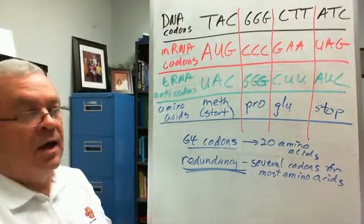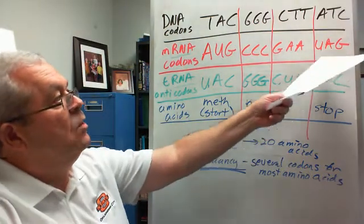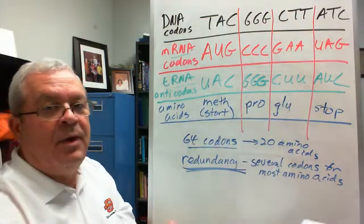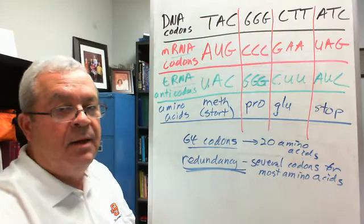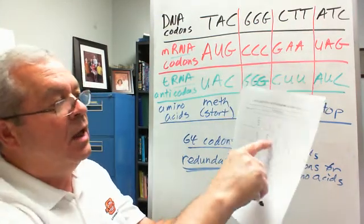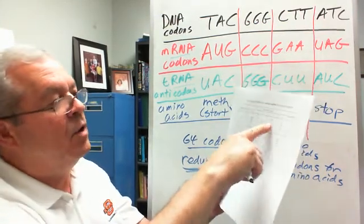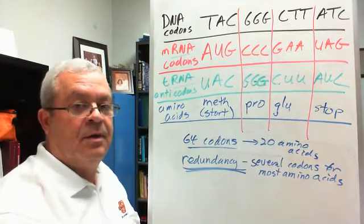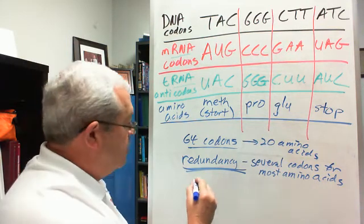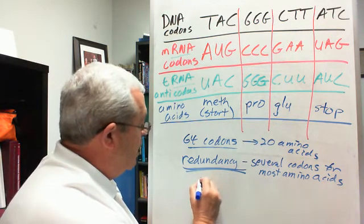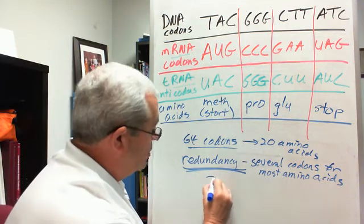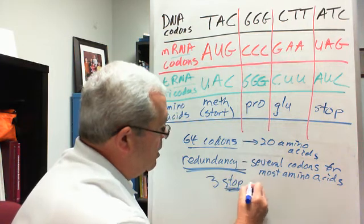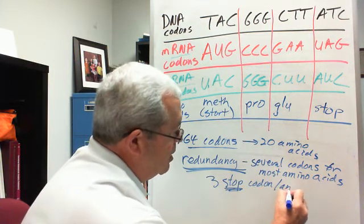Stop anticodon, and there's codons, anticodons, that code for STOP. Now we know how the enzymes know where to STOP. But there's not just one STOP codon on this chart. They're all kind of in the same general area. How many codons code for STOP and anticodons? Three. And so there are three STOP codons and anticodons.